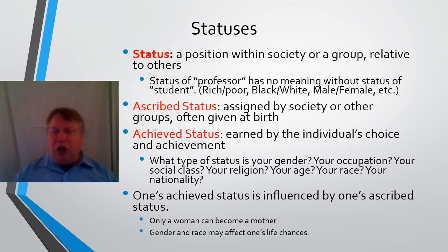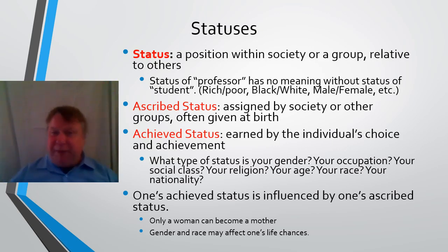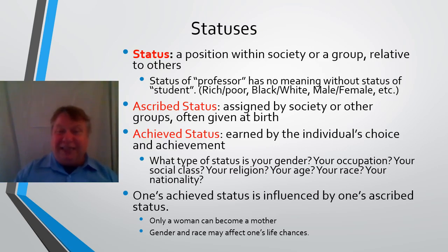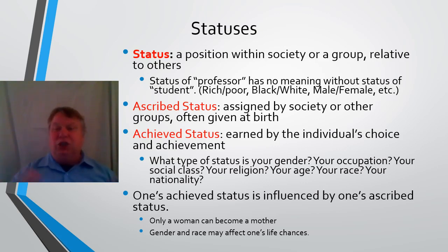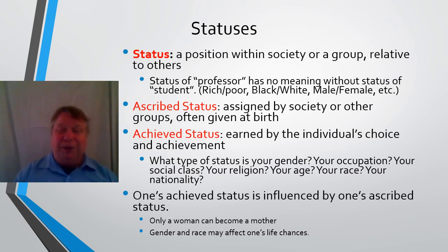What about your job? Typically job is seen as an achieved status. But if you're born poor, it's very hard to become an entrepreneur — some people do it, but most don't. So your ascribed status of being poor will have a huge influence on your achieved status. Social class is typically your ascribed status of birth, although you may end up improving or losing out. Religion — in modern society we think of religion as a choice, but most people follow their parents' religion, so it's typically ascribed first by your parents, though people do change.